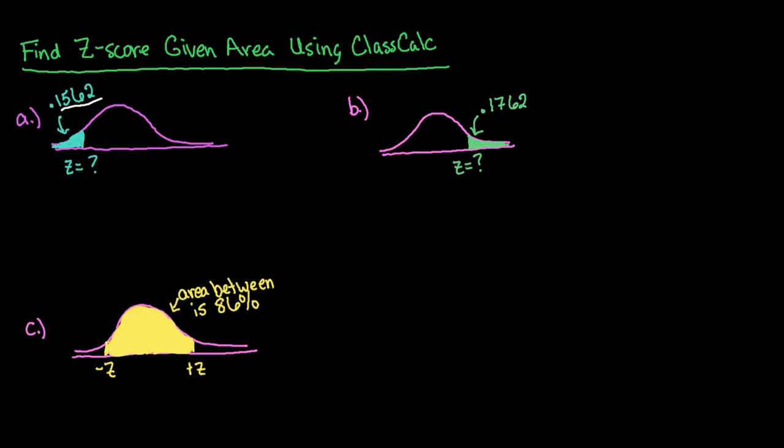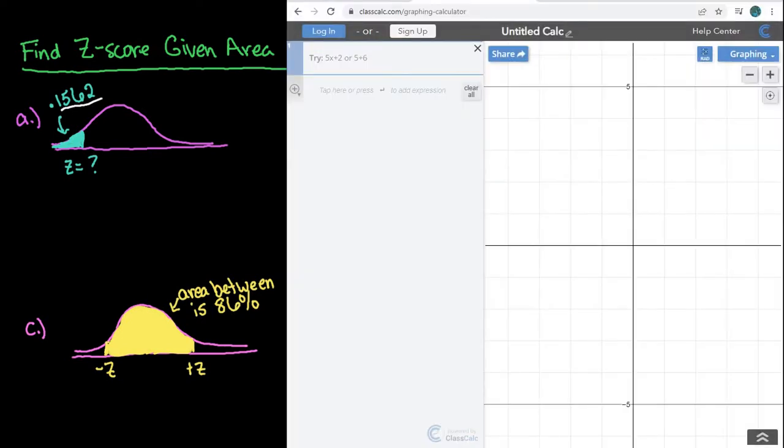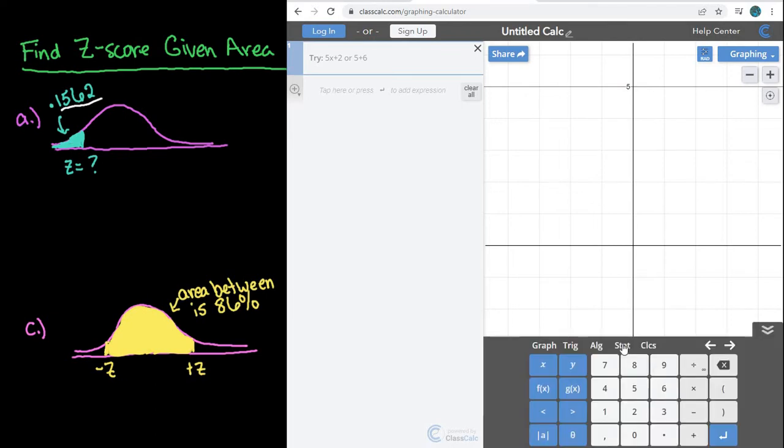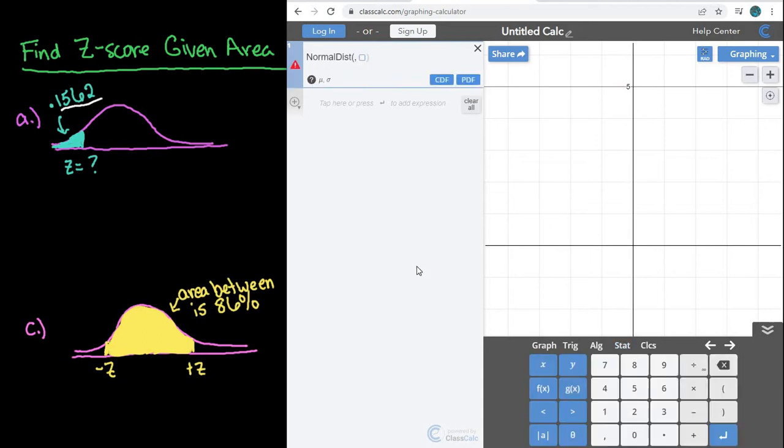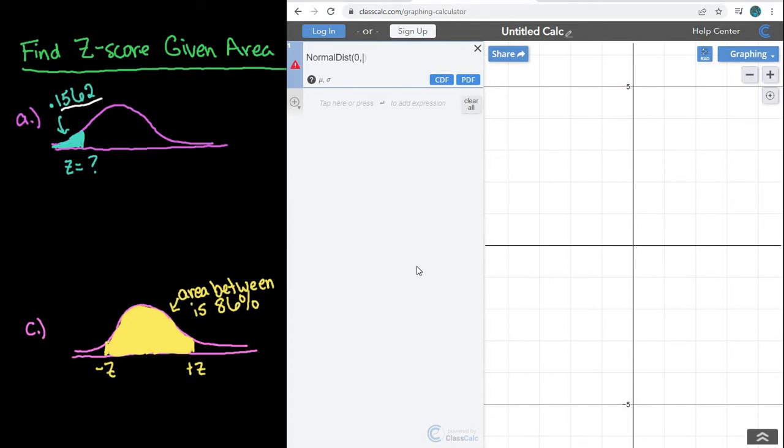So let me grab the calculator, and what you're going to do is you're going to start by clicking on the little arrows at the bottom and go to Stat, and we're going to go to the Distributions. I'm going to choose the Normal Distribution, and since I'm dealing with the Standard Normal, the mean is 0 and the Standard Deviation is 1.